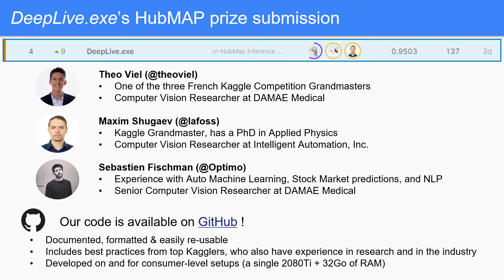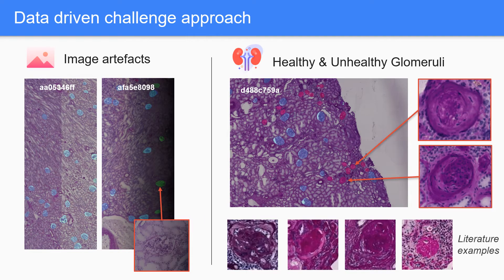Our solution is actually fourth place and we've made the code fully available on GitHub. Our approach is data-driven — we need to understand what's going on for the model to perform well. We think there are two main aspects: first, the model has to be robust through data quality issues because there is a lot of variation in the data. Second, we cannot really predict healthy glomeruli without considering the unhealthy ones.